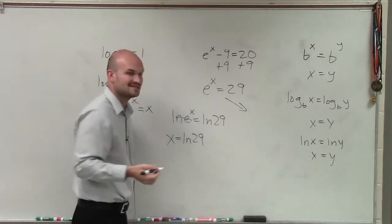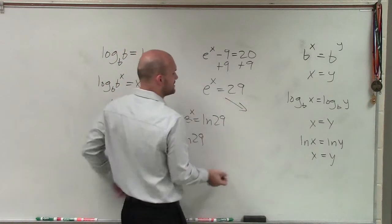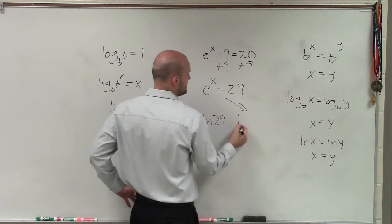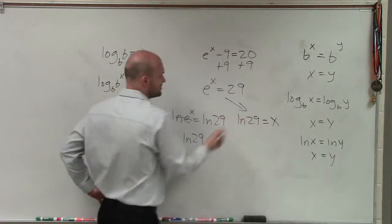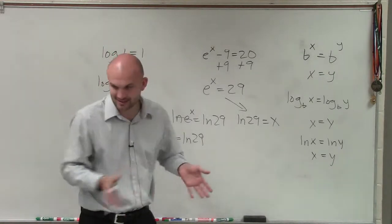Or I could also just convert this to exponential form. By converting this to exponential form, since this is my base ln, I'm going to have ln of 29 equals x. So you can see it's a very simple process to get to the exact same method.